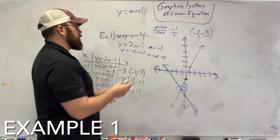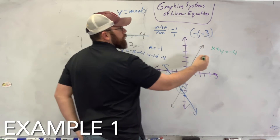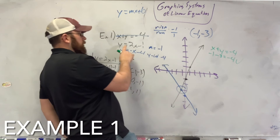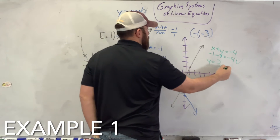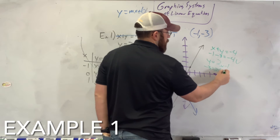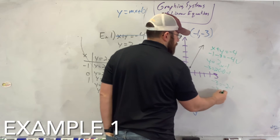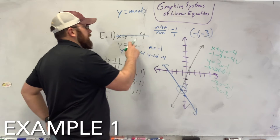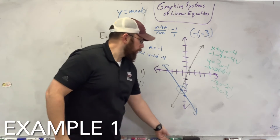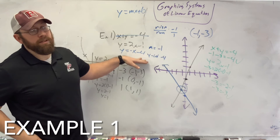Let's verify this. For the first equation x plus y equals negative 4: plugging in (negative 1, negative 3) gives negative 1 minus 3 equals negative 4. Check! For the second equation y equals 2x minus 1: plugging in (negative 1, negative 3) gives negative 3 equals negative 2 minus 1, so negative 3 equals negative 3. Both equations work with (negative 1, negative 3) — this is the only point in all of infinity where these two lines cross.